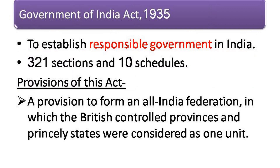Government of India Act 1935. This act was brought to establish responsible government in India. It was a long and elaborate act, consisting of 321 sections and 10 schedules. The following were the provisions of this act.